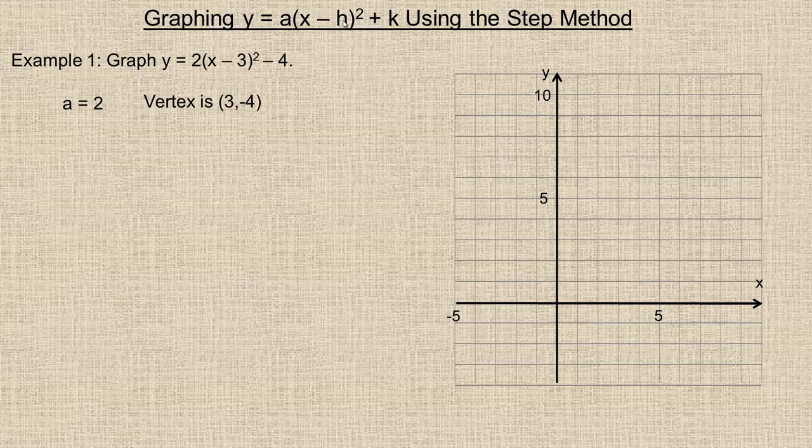Now remember it's x minus h, so h would be the number 3 here, it's not negative 3. If h was negative 3, then the equation would look like this: y equals 2(x - (-3))² - 4. So if h was actually negative 3, then this would actually be x plus 3 in here. So h is this number, which is in this case 3. So we're going to plot (3, -4), over 3 and down 4, so there's the vertex right there.